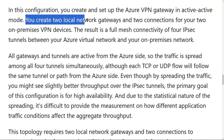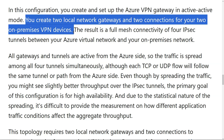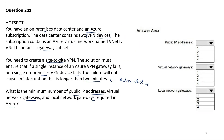You create two local network gateways and two connections for your two on-premise VPN devices. Therefore, the total public IP addresses required is equal to 4: two for Azure VPN and two for local network gateways. For virtual network gateways, only one virtual network gateway with two instances of VM is required to be configured. For local network gateways, since we are having two VPN devices or physical devices, two local network gateways have to be configured in Azure.